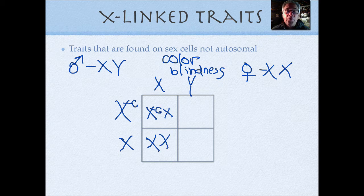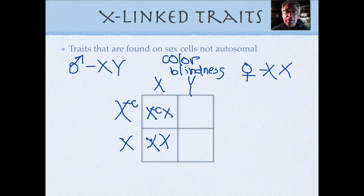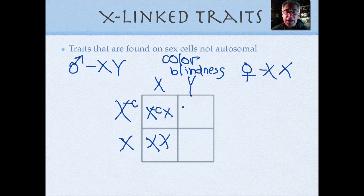So we have one female carrier and one normal sighted, not colorblind. If this Y sperm fertilizes that egg, you get an X and a Y with the trait for colorblindness on one X.